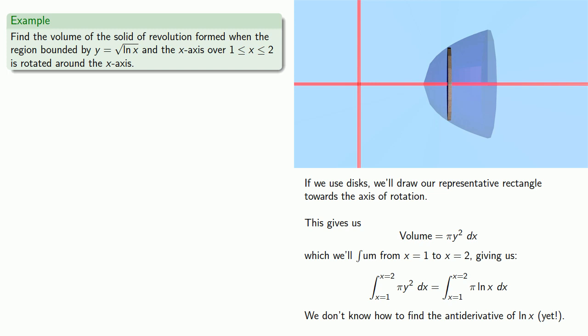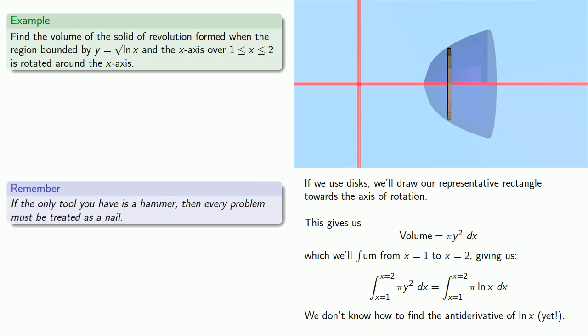This is why it's important to have a couple of different methods of approaching the same problem. Because if the only tool you have is a hammer, every problem must be treated as a nail. So if the only method we had of finding volumes was using the disk method, then we'd have to evaluate this integral. And the fact that we might not know how to do this would not excuse us from having to do it.